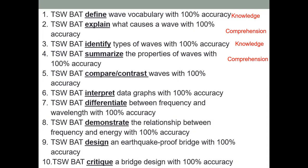Number five: 'The student will be able to compare and contrast waves with 100% accuracy.' That's analysis — getting into mid-level thinking. Number six: 'The student will be able to interpret data graphs with 100% accuracy.' That's comprehension. Number seven: 'The student will be able to differentiate between frequency and wavelength with 100% accuracy.' That's analysis. Number eight: 'The student will be able to demonstrate the relationship between frequency and energy with 100% accuracy.' That's application, another mid-level skill. Number nine: 'The student will be able to design an earthquake-proof bridge with 100% accuracy.' That's synthesis — you're asking the student to make something. Number ten: 'The student will be able to critique a bridge design with 100% accuracy.' That one is evaluation.